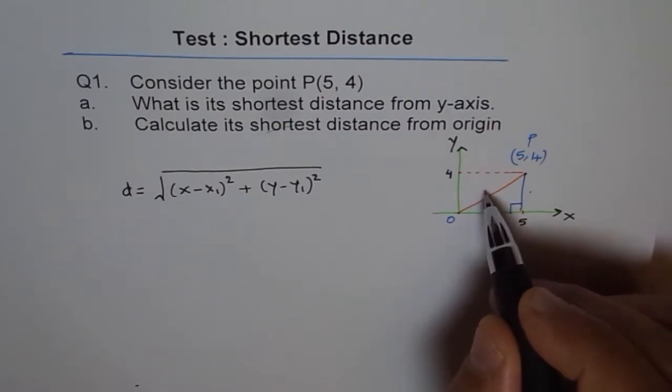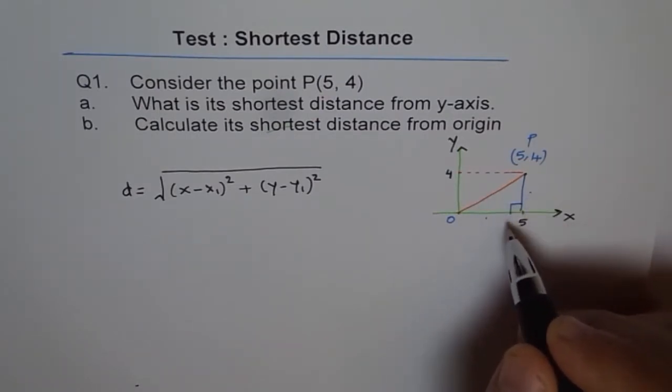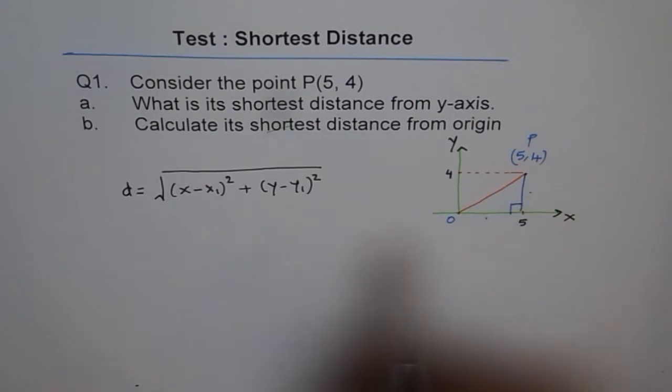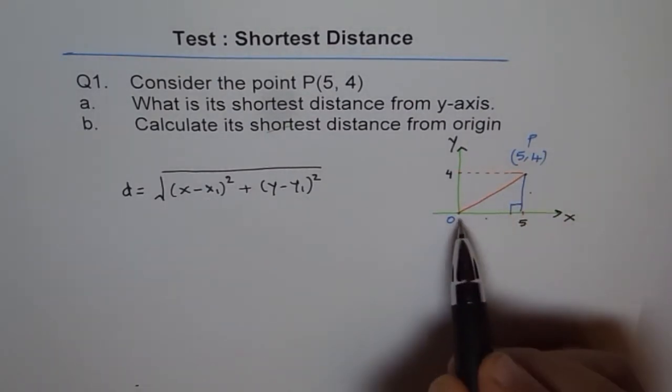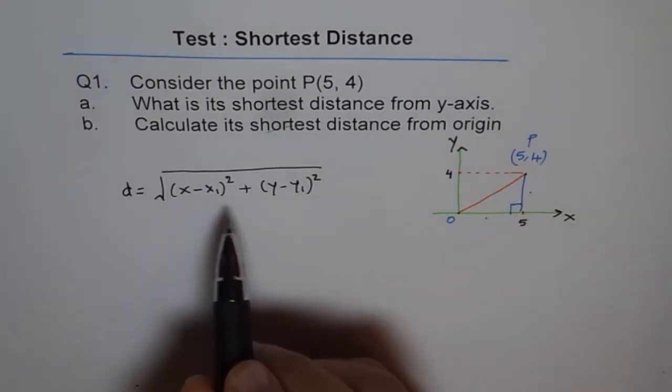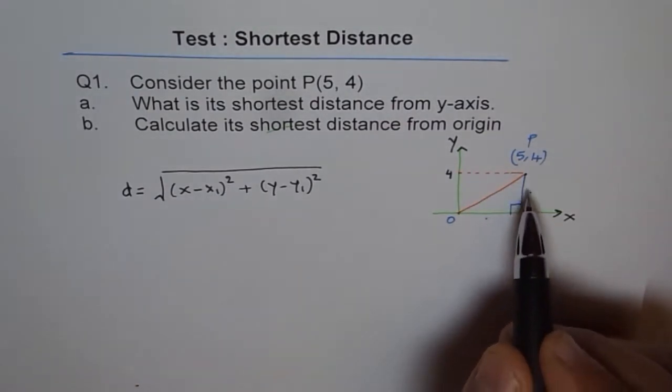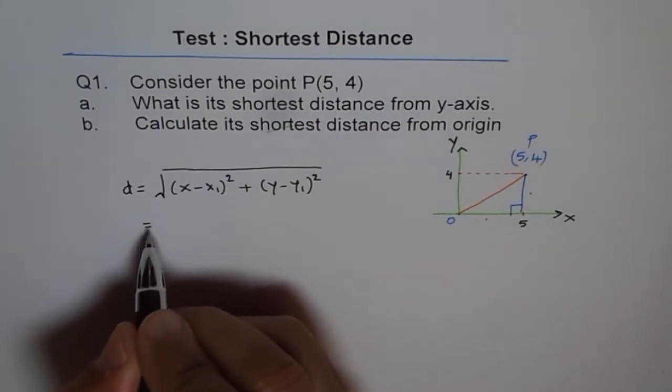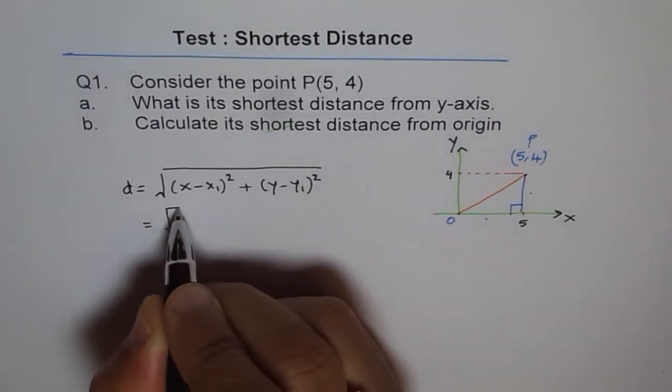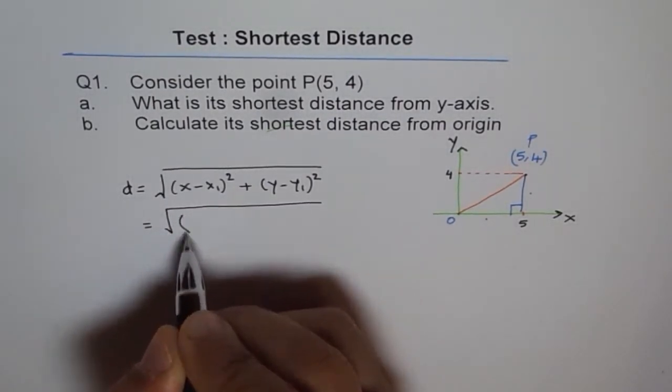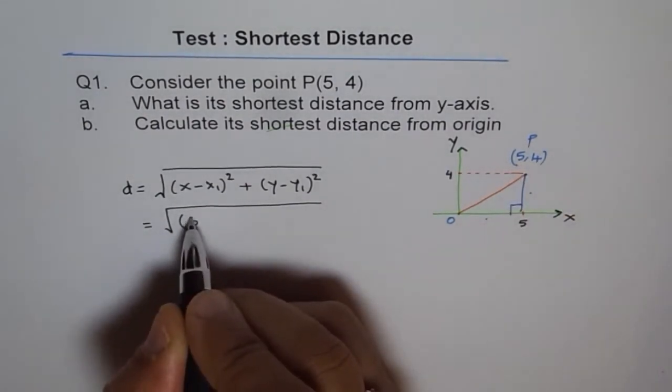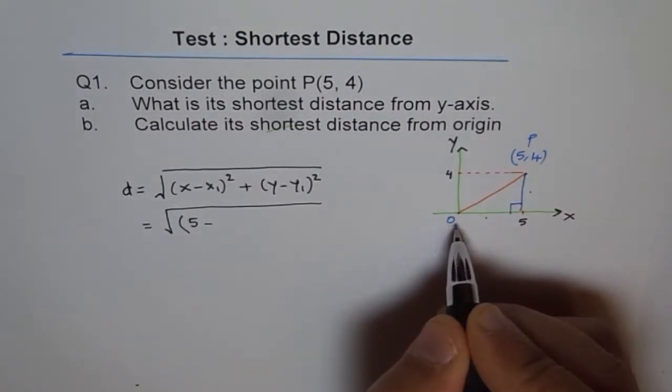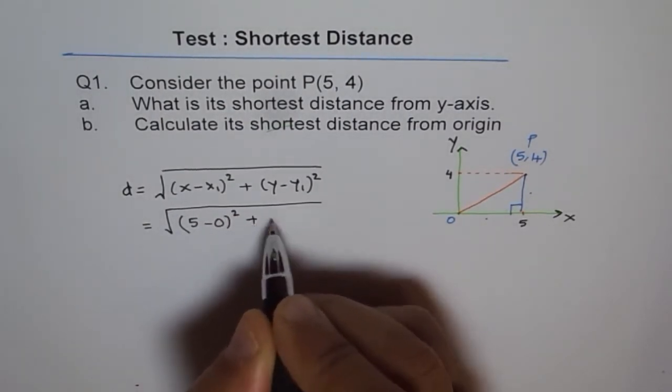So general formula is: distance is difference of x coordinate, square of that, plus square of difference of y coordinates, correct? So I'm taking this opportunity to make you understand the formula with such a simple example. Now I will do square root of my point x value is 5, y value is...